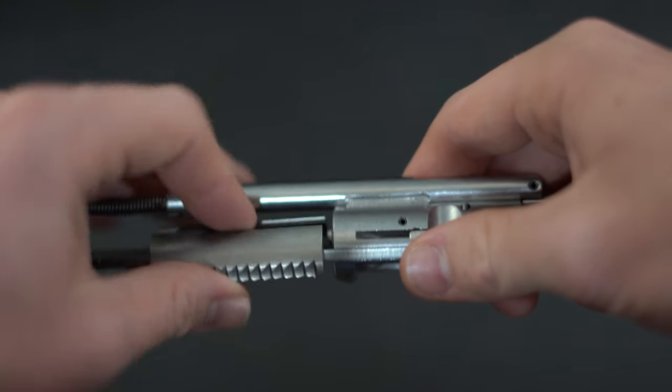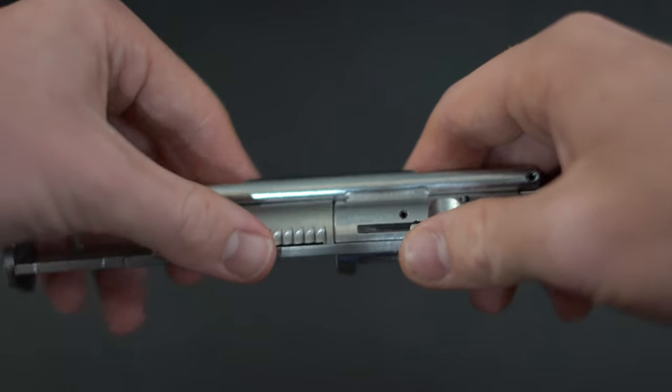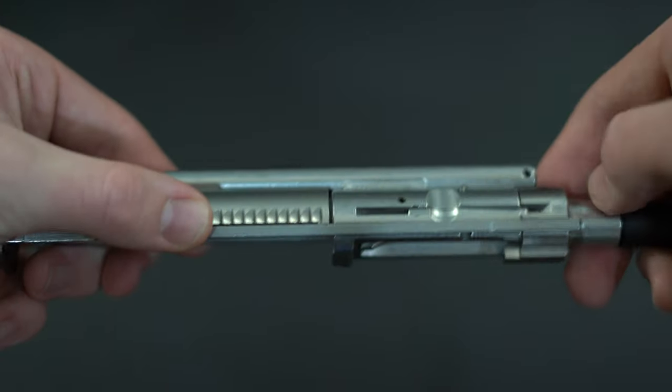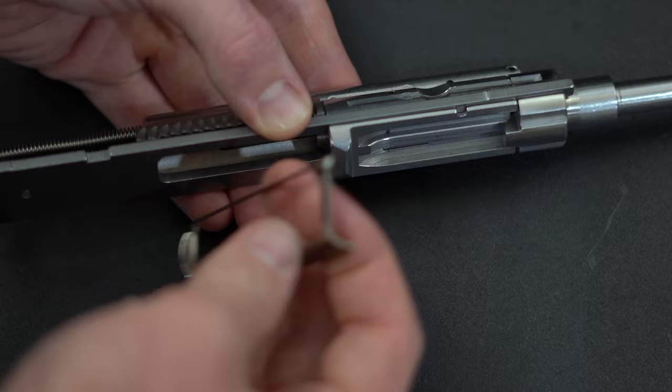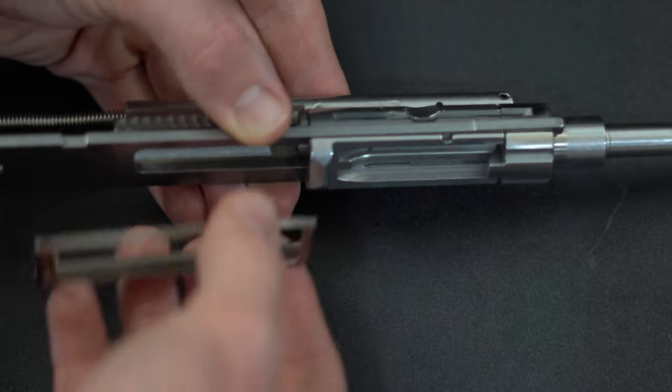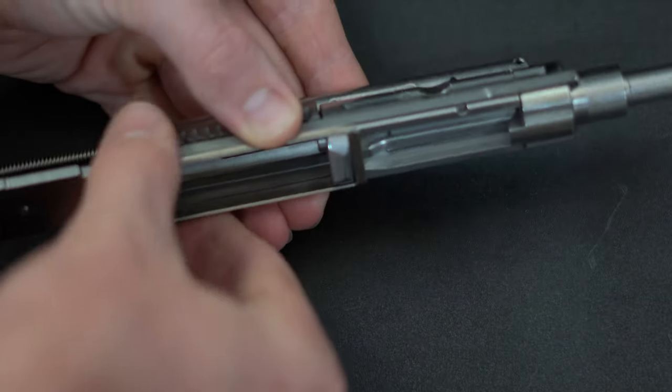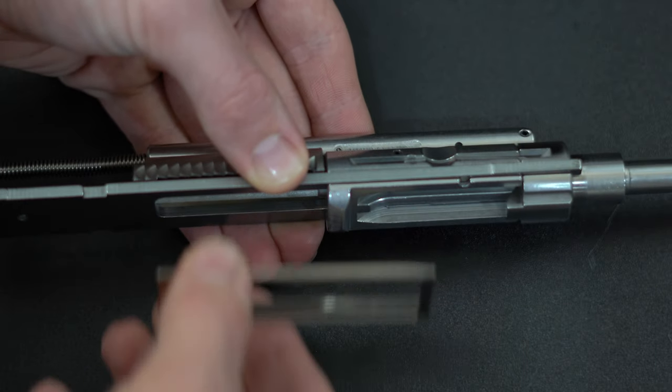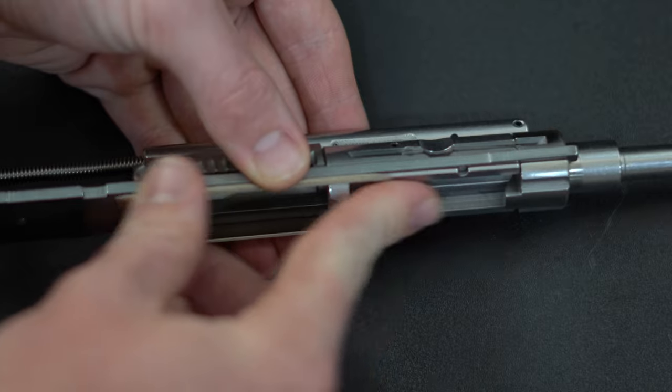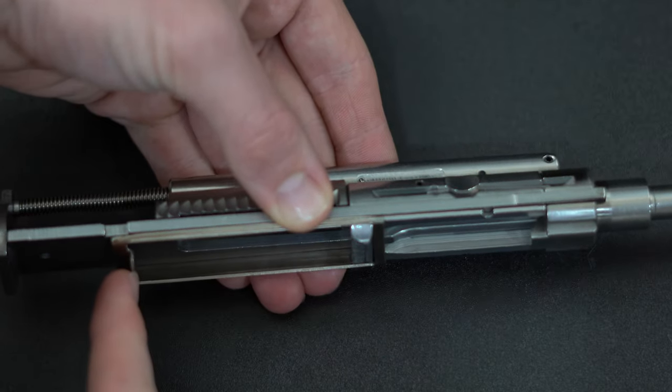Install the anti-bounce weight with the teeth facing the right side. This will want to come out, so hold it firmly. On the auto sear trip, make sure the notch is facing the back of the assembly. The auto sear trip will slide. Make sure it's slid back as far as possible.